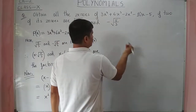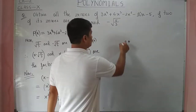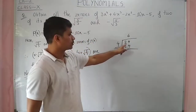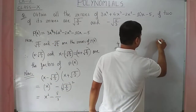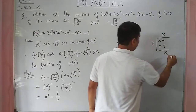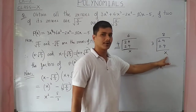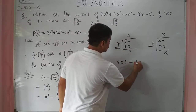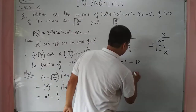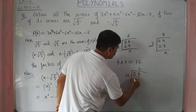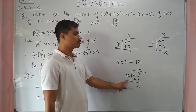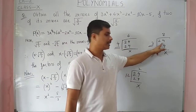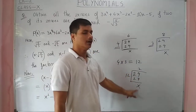Consider the number 24. If we divide 24 by 4 there is no remainder, so 4 is a factor of 24. Again, 3 divides 24 with no remainder, so 3 is also a factor of 24. Now multiplying 4 and 3 gives 12. If we divide 24 by 12 there is no remainder, so 12 is also a factor of 24. The product of two factors is also a factor.